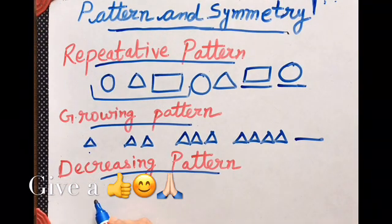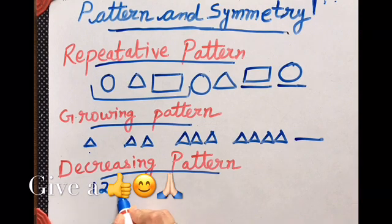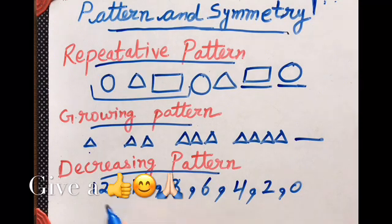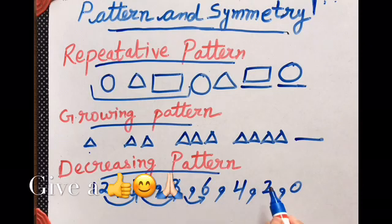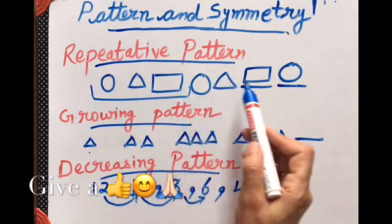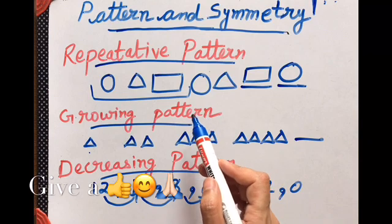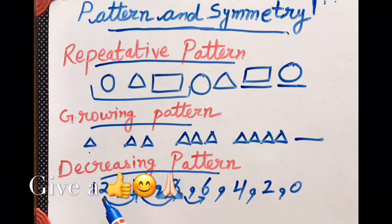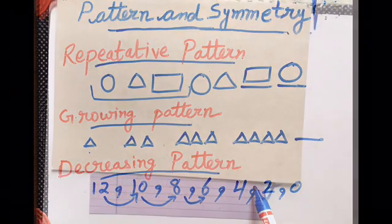Then it is decreasing, like twelve, twelve minus two is ten, ten minus two is eight, eight minus two is six, six minus two is four, four minus two is two, zero in this way. So it is reducing. So this is repetitive in which the pattern is repeating again and again, growing in which the pattern is increasing, and decreasing in which there is a reduction in the number. These are the three basic types of patterns.